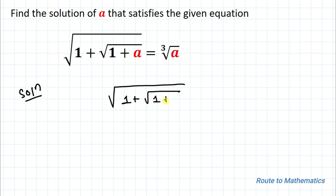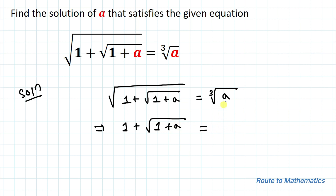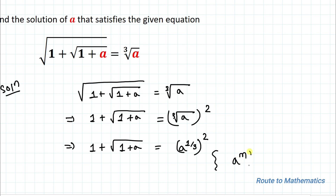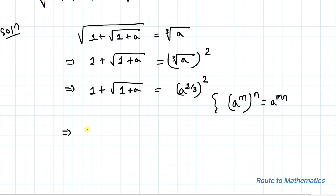Without any delay, let's start the solution. We have √(1 + √(1 + a)) = ∛a. In order to eliminate the root, we'll square both sides of the equation. By squaring both sides, we get 1 + √(1 + a) = (∛a)². The cube root of a can be written as a^(1/3), so (a^(1/3))² equals a^(2/3), using the exponential rule (a^m)^n = a^(mn). So we have 1 + √(1 + a) = a^(2/3).